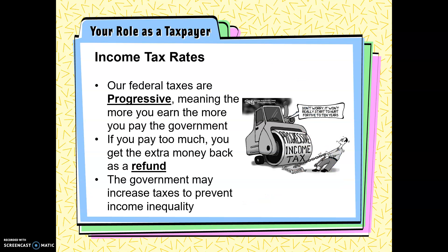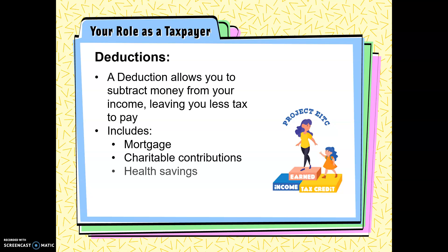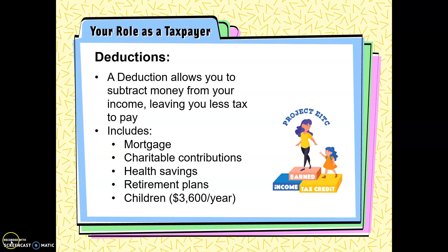Just a reminder: if you pay too much in taxes, you get the extra money back — it's called a refund. A deduction allows you to subtract money from your income, leaving you less tax to pay. Your mortgage can be a deduction, as can retirement plans and children. If you have any questions, please let me know in class.